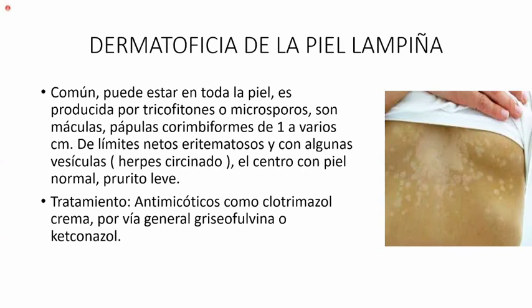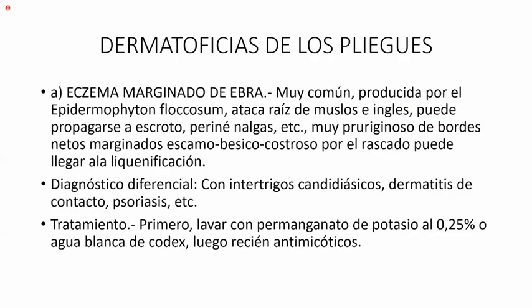Sería la dermatofitosis de la piel lampiña. Esta es muy común, puede estar en toda la piel, es producida por los tricofitones o microsporos. Son máculas, pápulas, anuliformes de uno a varios centímetros, de límites eritematosos y con algunas vesículas. También se llama herpes circinado por las vesículas. El centro tiene piel normal, prurito leve. El tratamiento: antimicóticos como clotrimazol crema, griseofulvina o ketoconazol de 200 miligramos, un comprimido cada 12 horas durante 7 días.